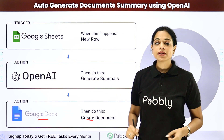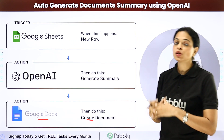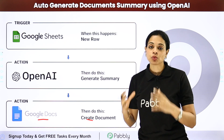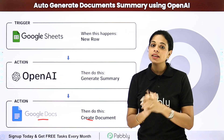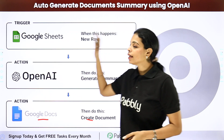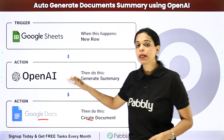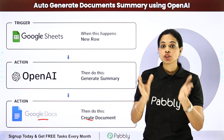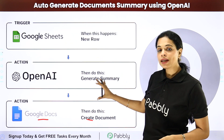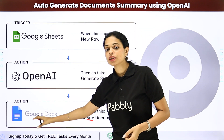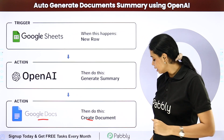The third example is auto-generating document summaries using OpenAI. Not only for students but for everyone — when you have to compose the summary of a document it is a time-consuming task. Here, when you have the entire document in your Google Sheet, it will be automatically summarized and then directly stored in your Google Docs as a new document. Isn't that fantabulous?